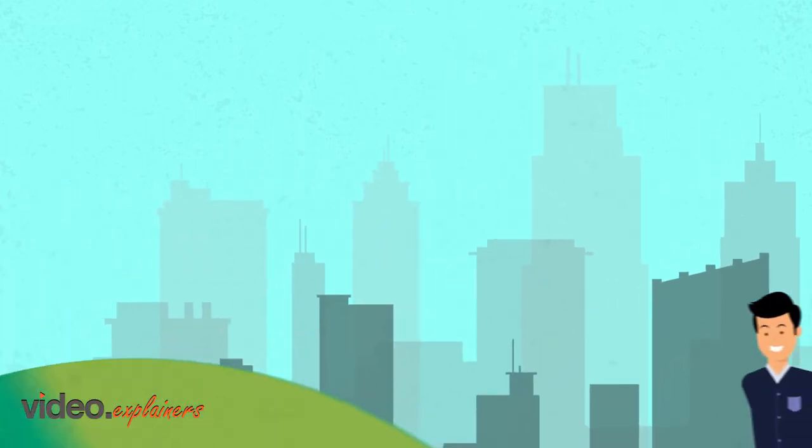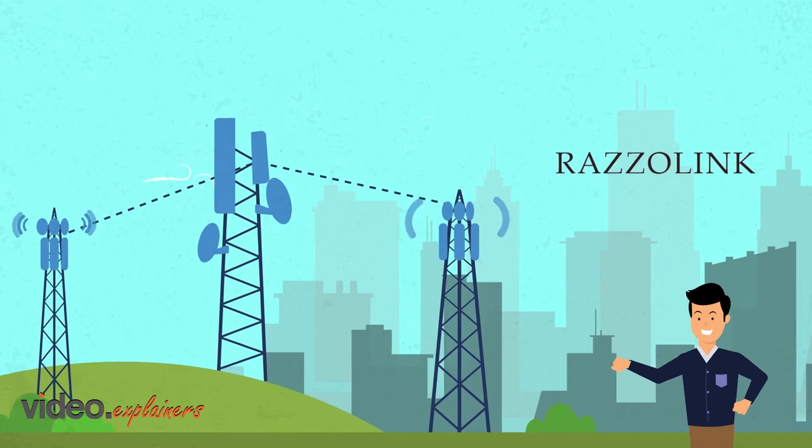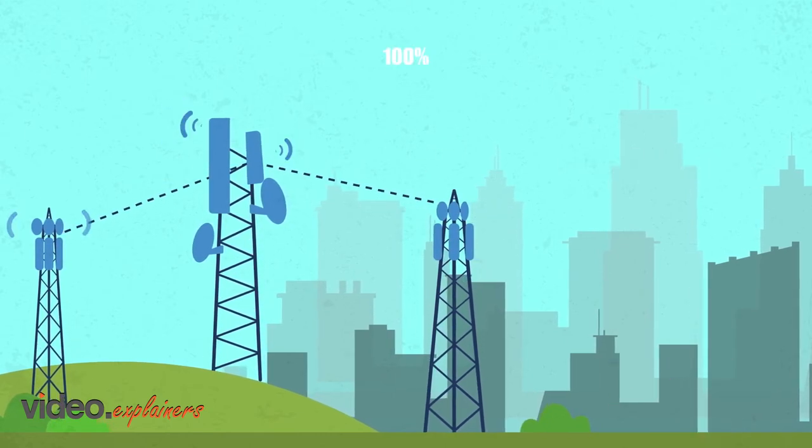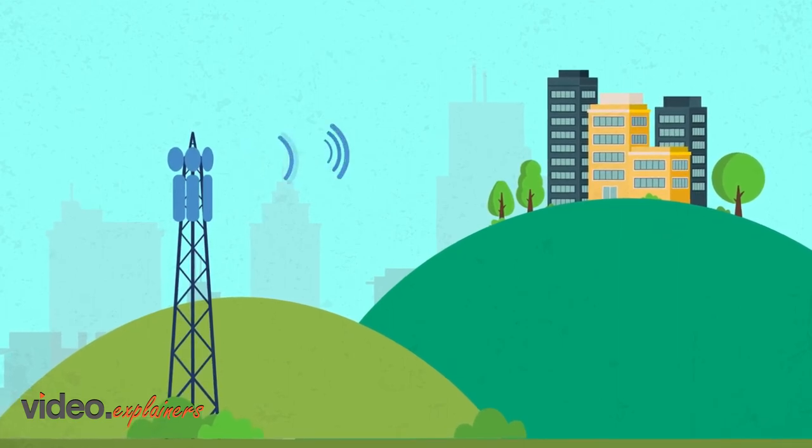That's why RazoLink created a network of over 150 towers to bring the wireless signal to you 100% over the air, to travel a few miles from one of our towers straight to your location.